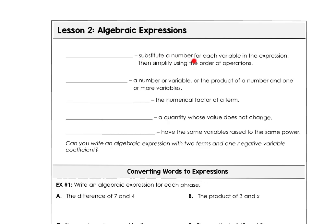When you substitute a number for each variable in an expression and then simplify using the order of operations, that's what we call evaluating. So you evaluate when you substitute numbers for variables.